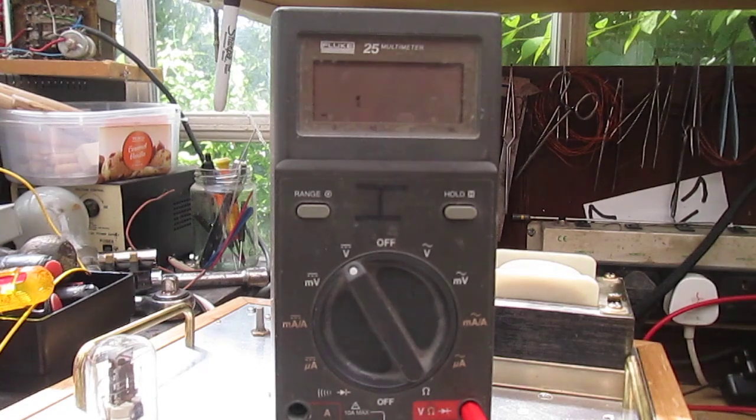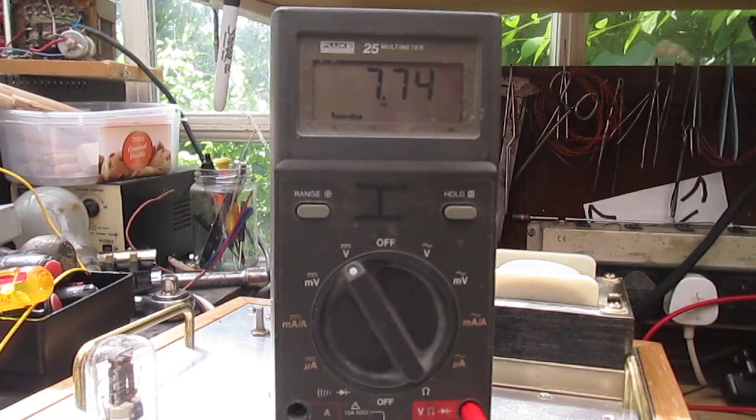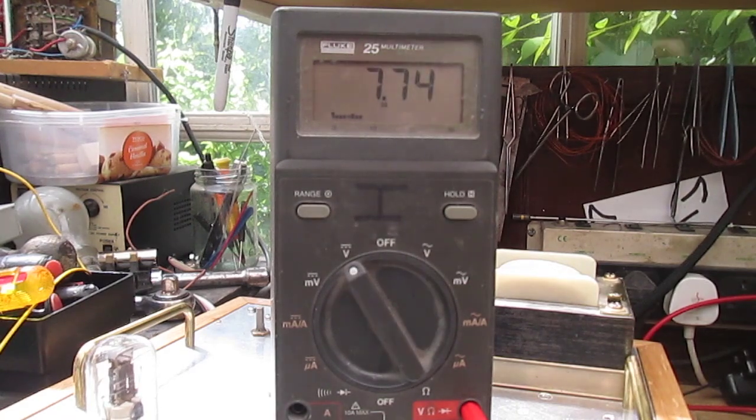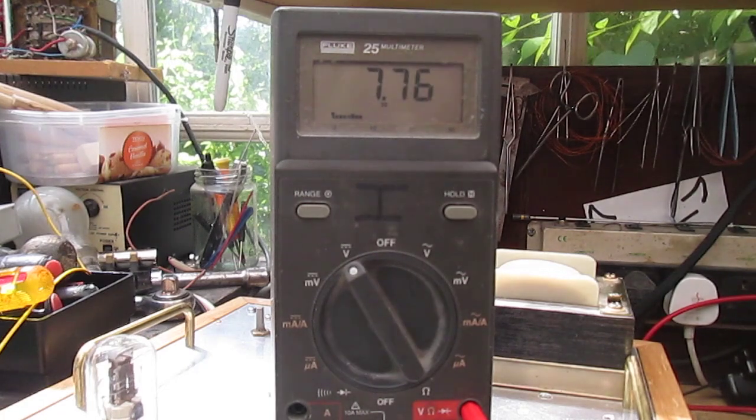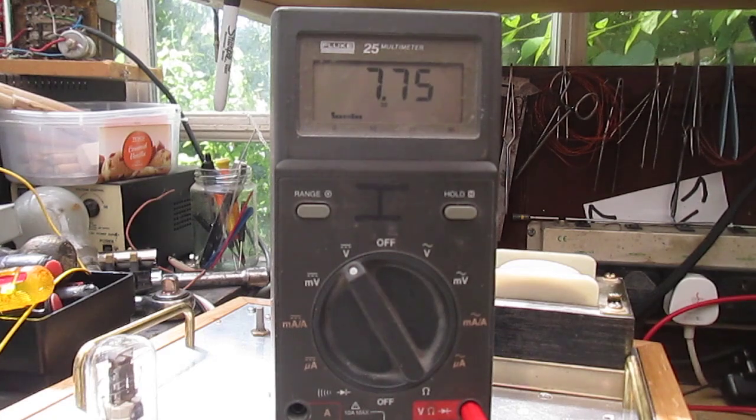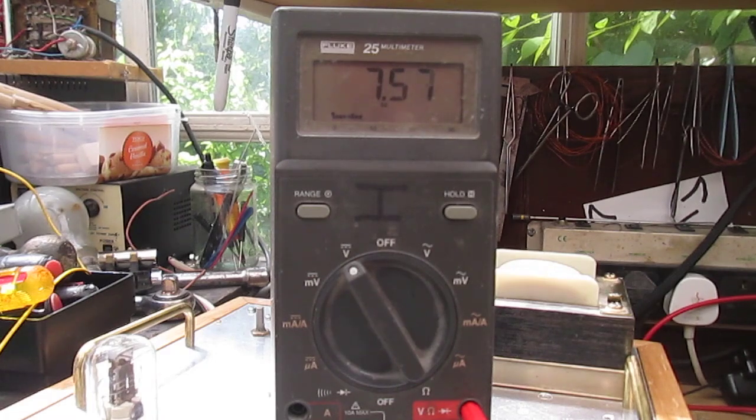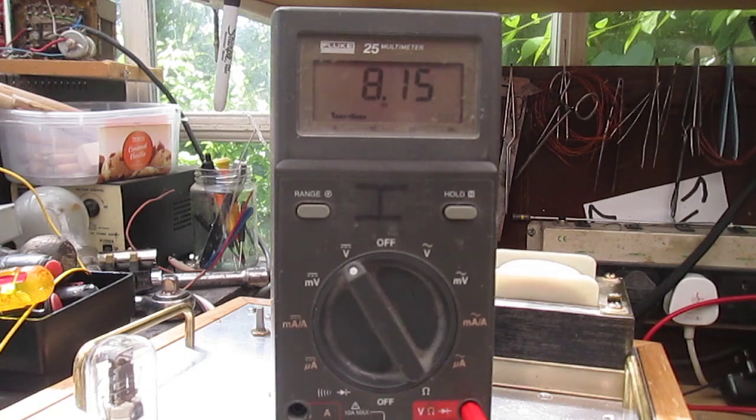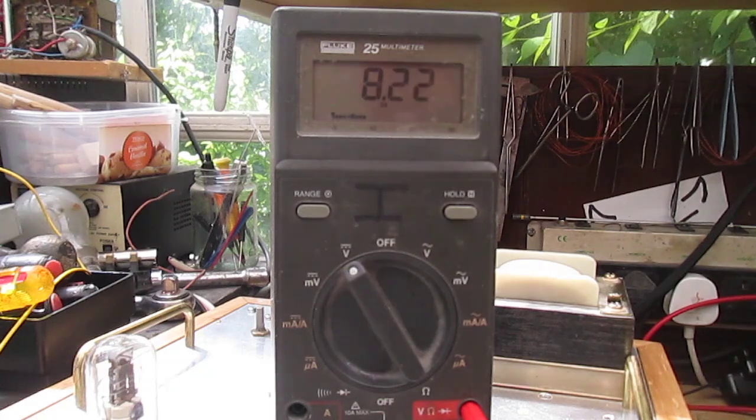So these valves are pretty bang on matched now. And that one's not far off either. That's brilliant. Lastly I'm going to measure the bias of the long tailed pair and that should be at eight volts. That's the 6BL7 long tailed pair. Try and find the right thing. Yeah, that'll do, it's about right.